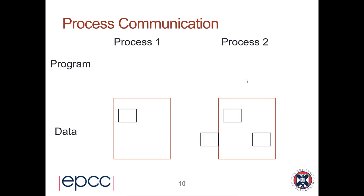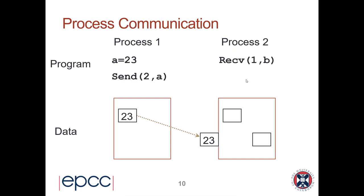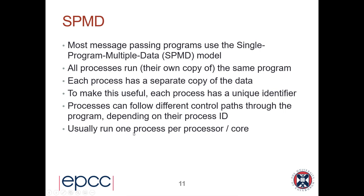To recap: to transfer data from process one to process two, I set a local variable to the data I want, then actively call a send specifying the destination process. Data is only transferred if the sender actively calls a send and the receiver actively calls a receive. Process two is in complete control of its own memory — it decides where to put the received message, here into variable B, and then assigns its own variable a to be B plus one, giving 24, completely different from process one's variable a which is 23.